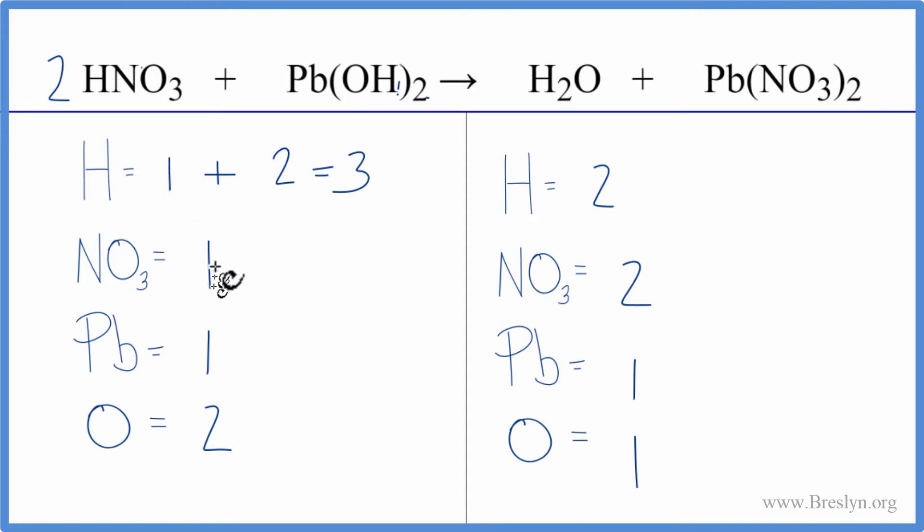We'd have one nitrate here times two. That would give us two. So those are balanced, and we need to update the hydrogens.